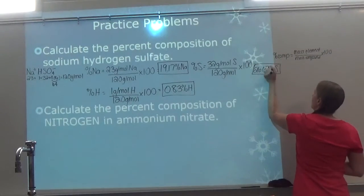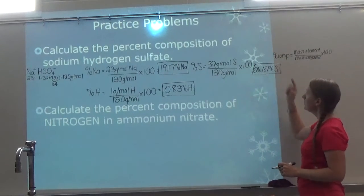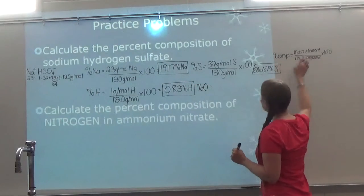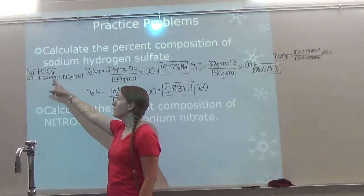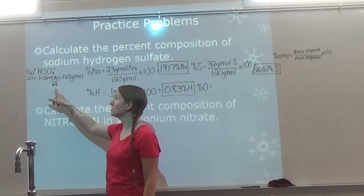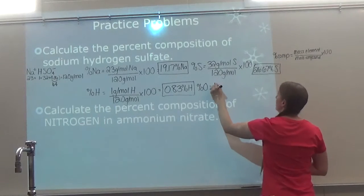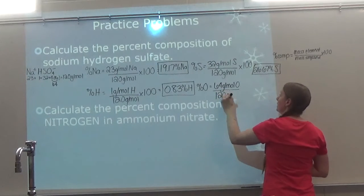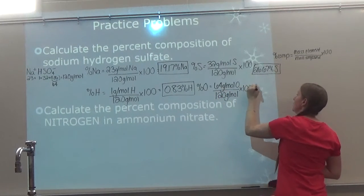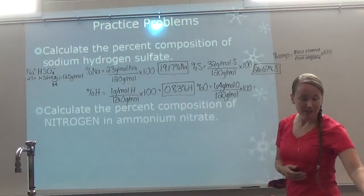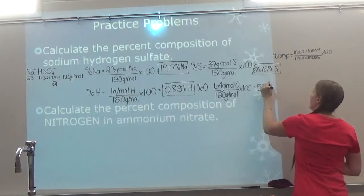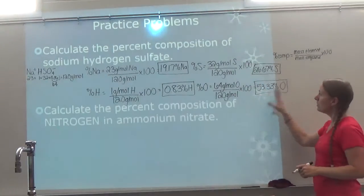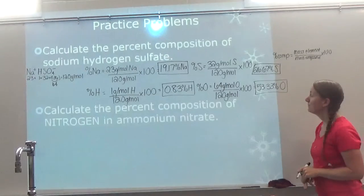For oxygen — and this is where a lot of people mess up — they want to put in 16. Remember, you have four oxygens, so oxygen actually has 64 grams per mole. You have to take into account the subscripts. So: 64 grams per mole over 120 grams per mole times 100 gives 53.33% oxygen. Don't forget: number, unit, and substance. If you add up all four percentages, you'll get approximately 100.